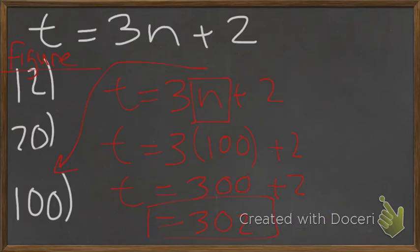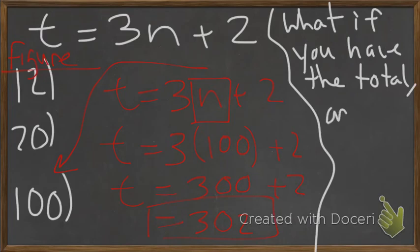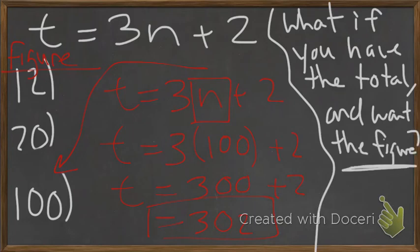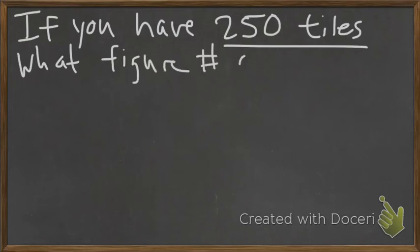Now, the question arises when we don't want to find the total number. We want to find out what the figure number is. So, what if you have the total and want the figure? Basically, in this case, we're going to have to work backwards. Say we have, if you have 250 tiles. If you have 250 tiles, what figure number can you make?